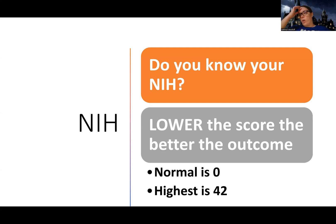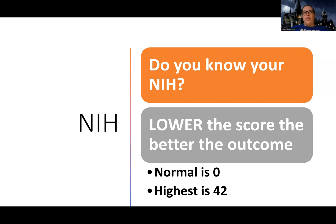When someone comes in with suspected stroke, the ER nurse is usually the first to assess them. My understanding is they do a mini NIH on the way to the hospital, then a full NIH in the hospital. The way I interact with this assessment is: if a patient is going straight from the ER to interventional radiology to have a clot removed, I'll actually meet the ER nurse in the procedural area and assess the patient before they go under, so I have a baseline. That way I can say, here's how they were before, and here's how they are now, since I'll be assuming care after the procedure.